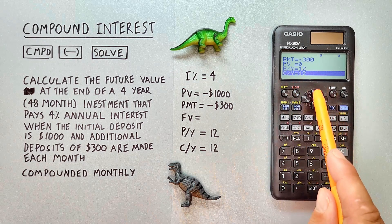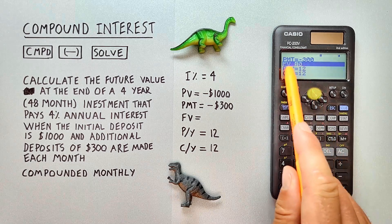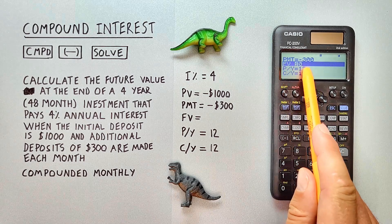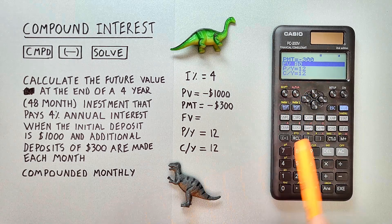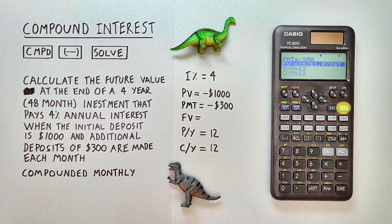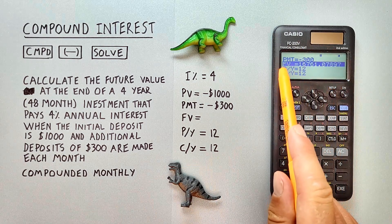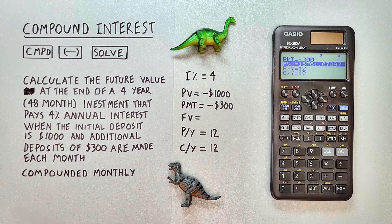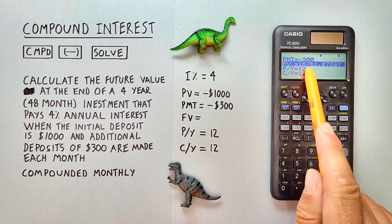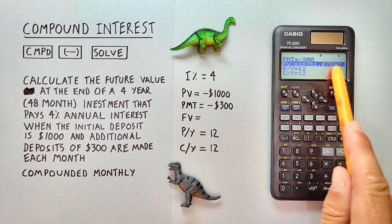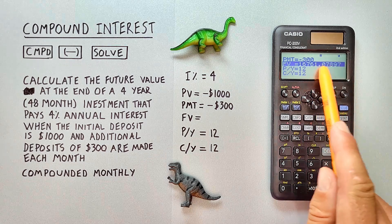And then we want to scroll up to the value we want to solve for, which is our FV. And then press solve. Our calculator will think for a bit, and then give our future value, which in this case is $16,761.07 or .08 if we want to round it.